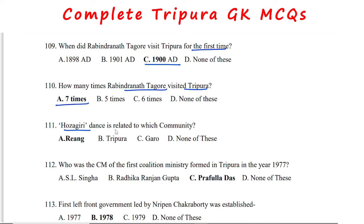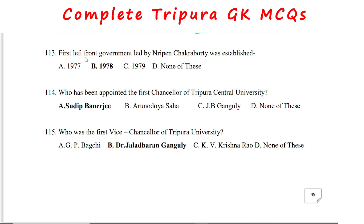Hojagiri dance is related to the Riyang community. The Chief Minister of the first coalition ministry formed in Tripura in 1977 was Prabhulal Das. The first Left Front government, led by Nripen Chakravarti, was established in 1978.